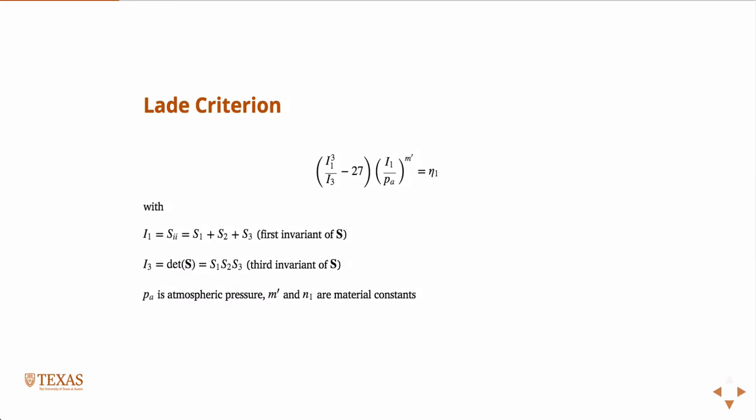Those two models, the Mohr-Coulomb model and the Hoek-Brown model, were only dependent upon sigma-1 and sigma-3. It's almost as if sigma-2 didn't matter. The intermediate principal stress didn't even matter in those models.